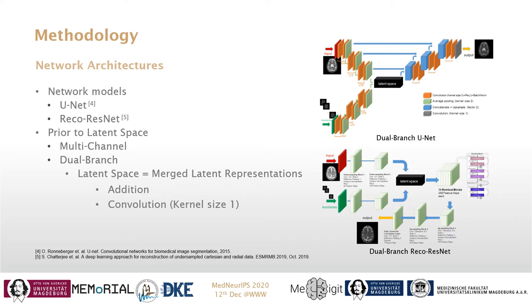The prior images were concatenated together on the channel dimension and were supplied to the second auxiliary branch. Both branches meet at the latent space while creating two different latent representations.